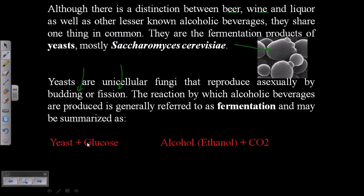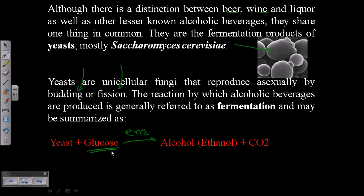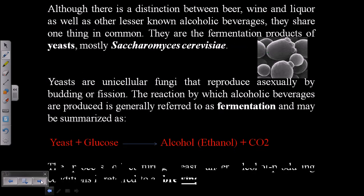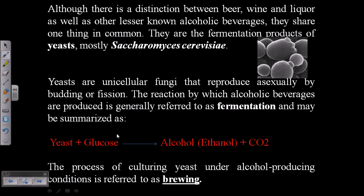What yeast actually does is take glucose, which is the simplest form of sugar, and act on it to convert it into alcohol by providing important enzymes. Like any chemical reaction, it requires enzymes to complete it. The yeast provides those enzymes to convert glucose into ethanol, and it also generates carbon dioxide which is released outside.